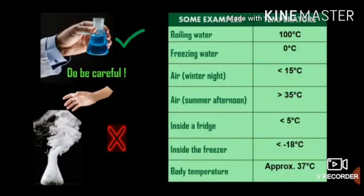Examples and temperatures. Temperature of boiling water: 100 degrees Celsius. Temperature of freezing water: 0 degrees Celsius. Temperature of air in winter night: less than 15 degrees Celsius. Temperature of air in summer afternoon: more than 35 degrees Celsius. Inside a fridge: less than 5 degrees Celsius. Inside the freezer: less than minus 18 degrees Celsius. Body temperature: approximately 37 degrees Celsius.